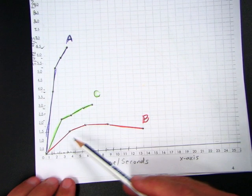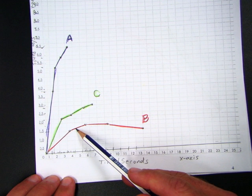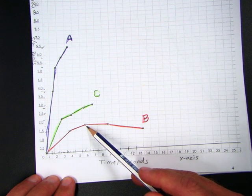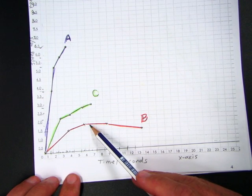Remote control car B accelerates. It slowly accelerates more. And then from here to here, it actually is constant speed.